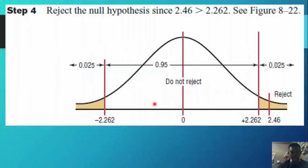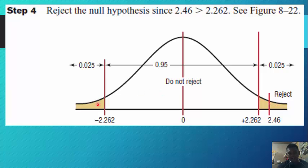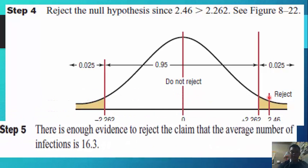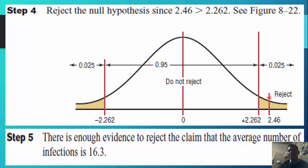We reject the null hypothesis since 2.46 is greater than 2.262, as shown in the figure. The negative 2.262 and positive 2.262 show the boundary of the critical region. The value obtained in step 3 resides within the critical area, which means we reject the null hypothesis. To summarize: there is enough evidence to reject the claim that the average number of infections is 16.3.